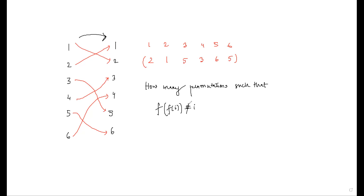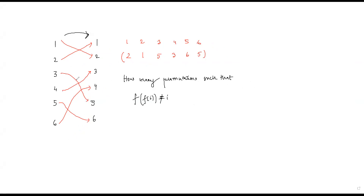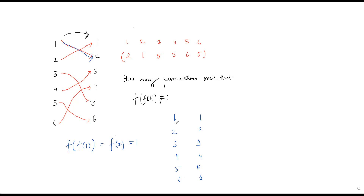What does f(f(i)) ≠ i mean? Let's check an example. Observe: 1 goes to 2, and f(f(1)) = f(2) = 1, so f(f(1)) = 1, which equals i. So that permutation doesn't satisfy our condition. One permutation that works: 1→2, 2→3, 3→4, 4→5, 5→6, 6→1. Here f(f(1)) = f(2) = 3 ≠ 1, so it works.